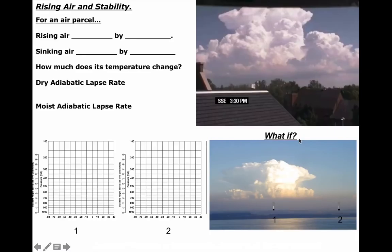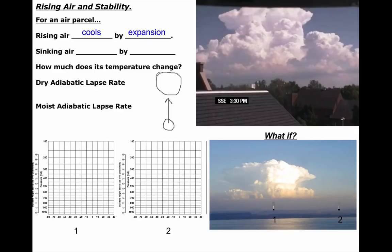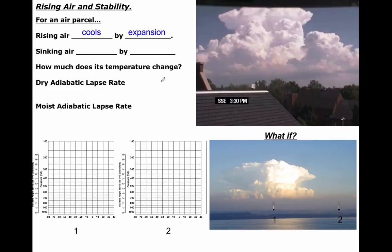First things first: rising air cools by expansion. If you take a chunk of air and force it to ascend, it goes up in the atmosphere and will expand in size. Down here at the surface, the pressure on the parcel is high, but as it rises higher in the atmosphere where pressure is lower, the internal pressure pushes out and causes the parcel to expand — and as that happens, the parcel gets bigger and cooler.